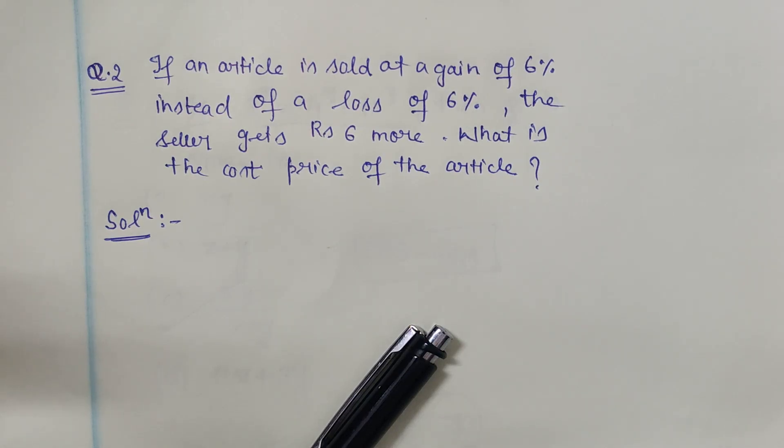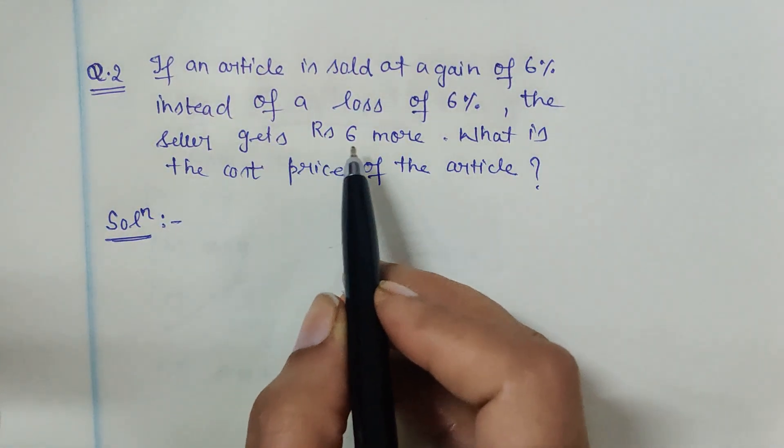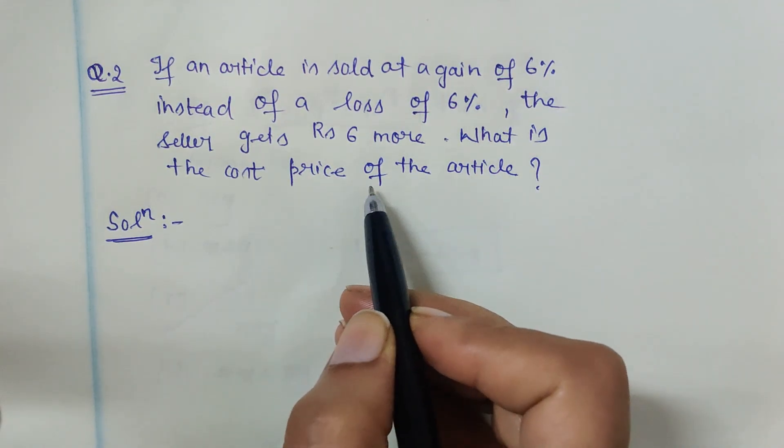Hello friends, this is another question of CDS exam 2019. If an article is sold at a gain of 6% instead of a loss of 6%, the seller gets rupees 6 more. What is the cost price of the article?